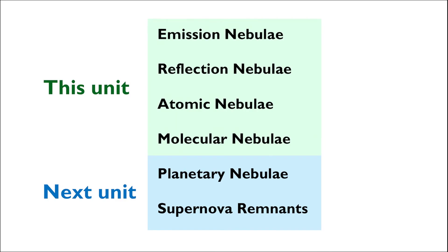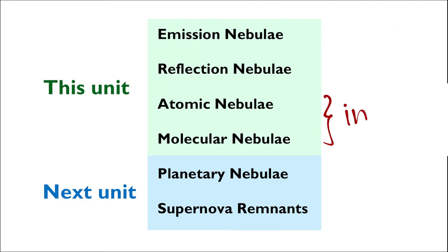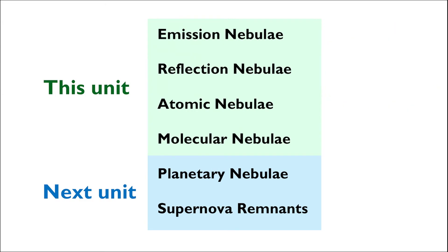Of the types of ISM that we'll cover in this video, emission and reflection nebulae are visible to us and can be easily photographed and observed, but atomic and molecular nebulae are invisible and require roundabout ways of detection. Let's find out why.